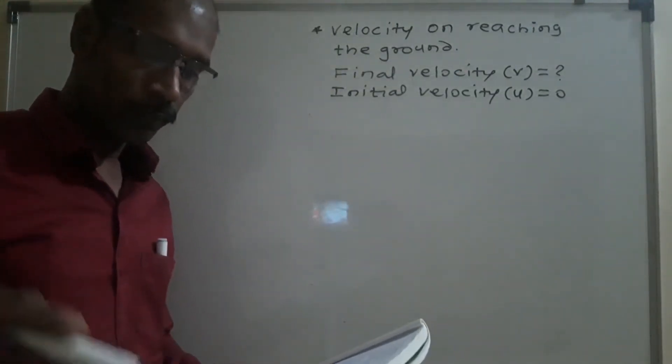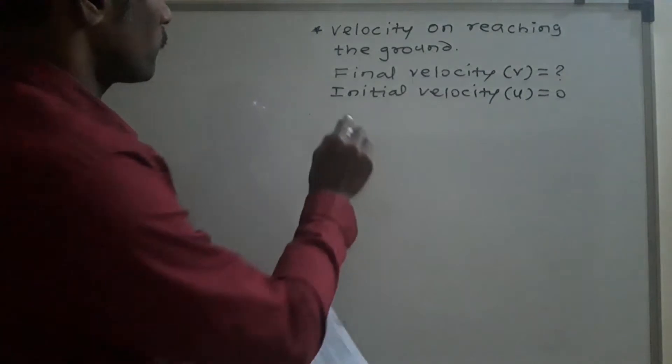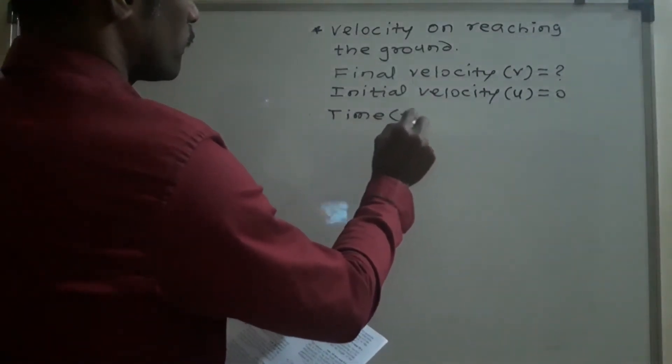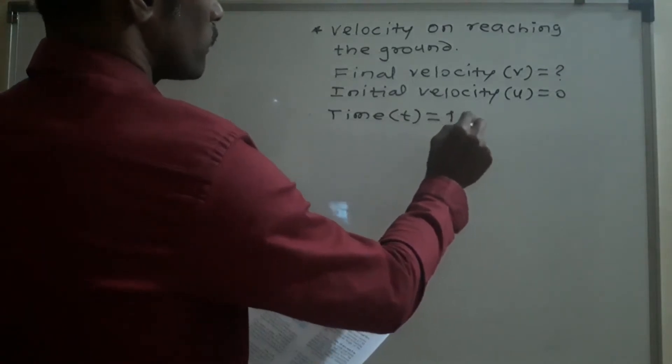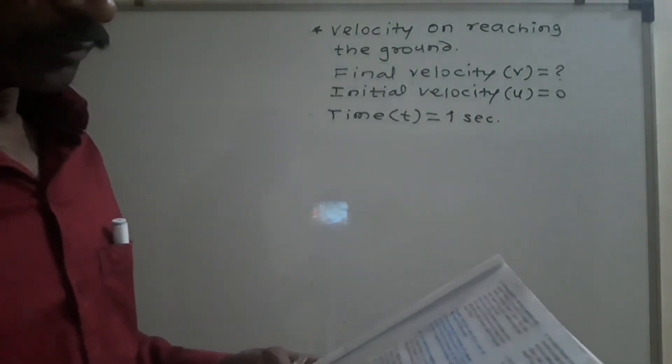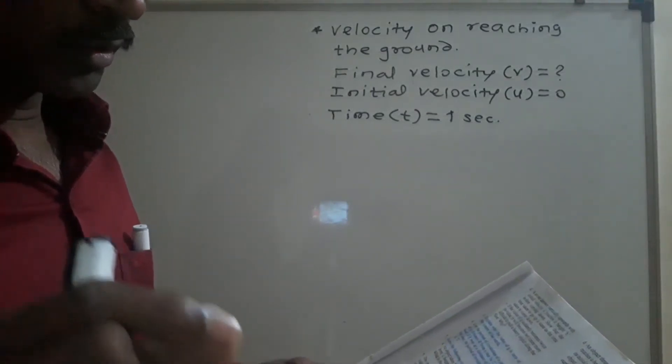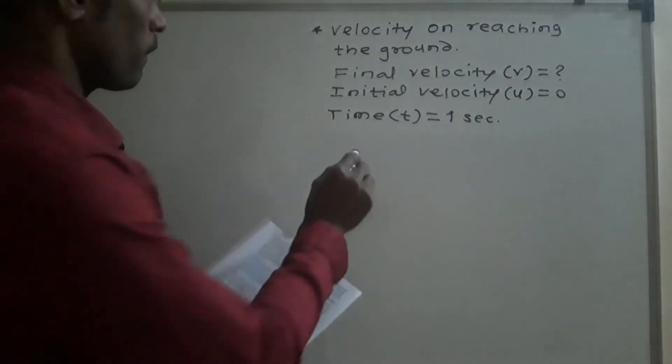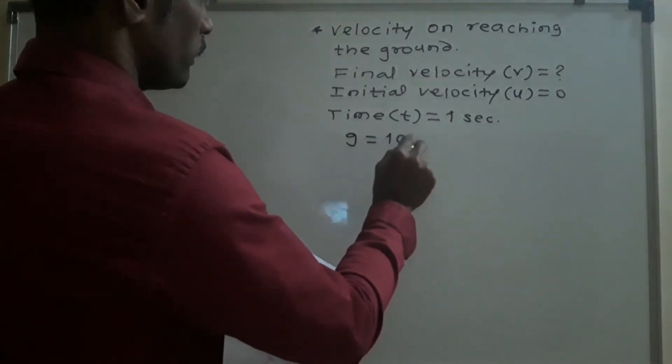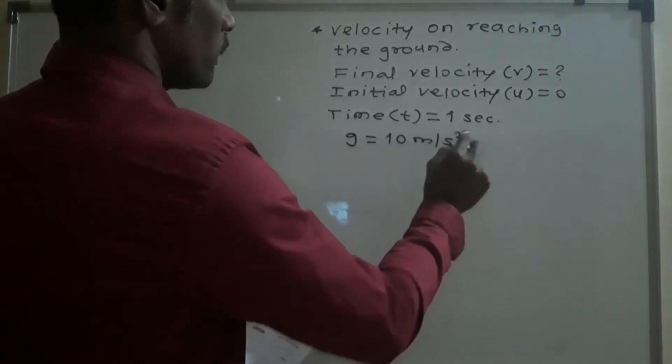Then time is given, time t is equal to 1 second, then assume g is equal to 10 meter per second square.